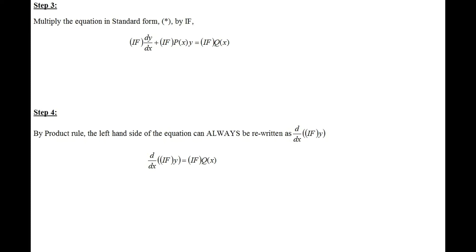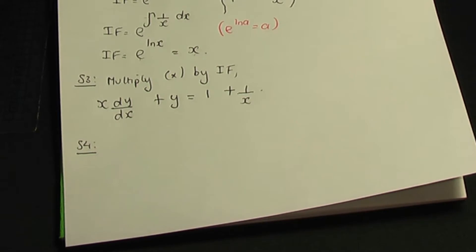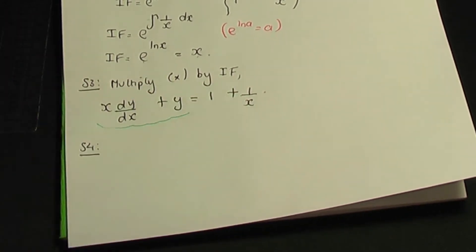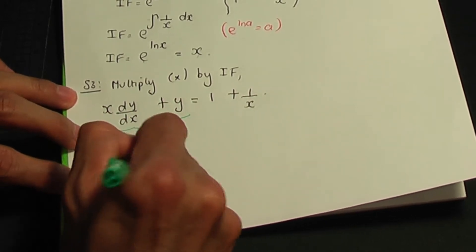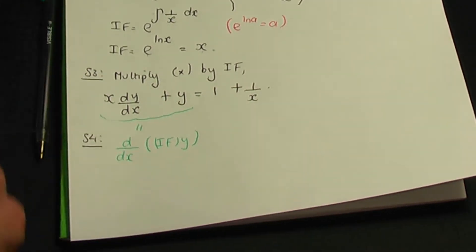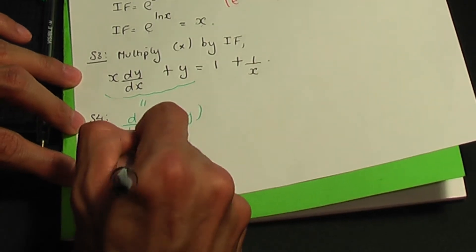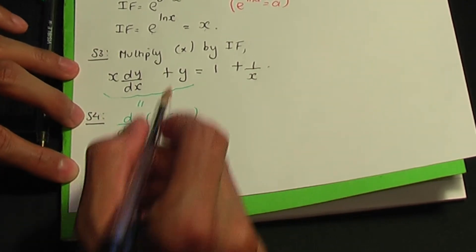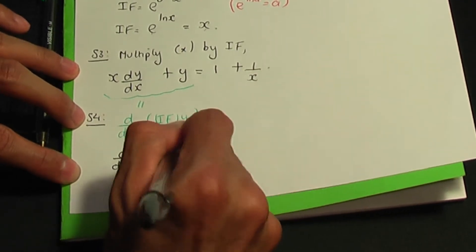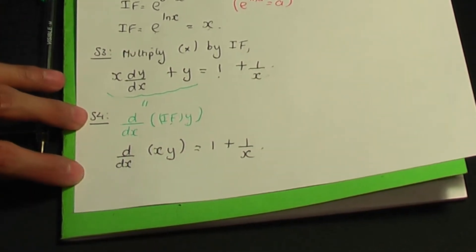In step number four, we can rewrite the left-hand side of the equation from step three using d by dx of IF times y. So in step number four, we're going to rewrite the entire left-hand term as d by dx of the integrating factor times y. So we have d by dx of x times y, and that is equal to, on the right-hand side, 1 plus 1 over x.